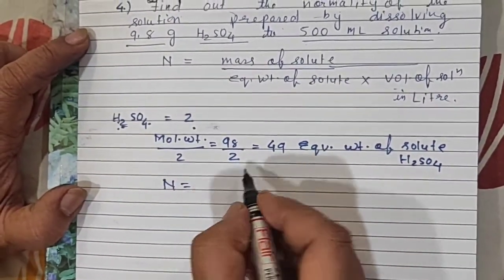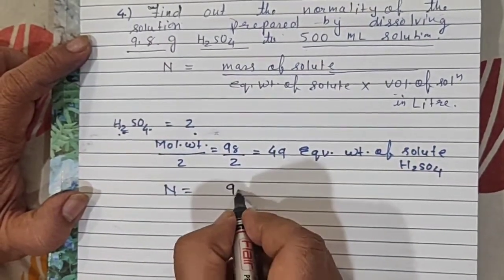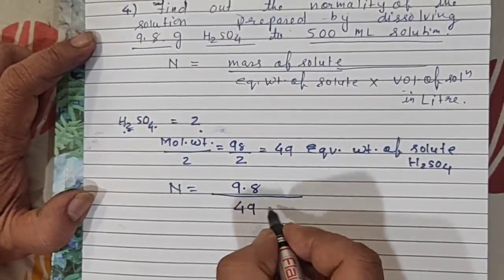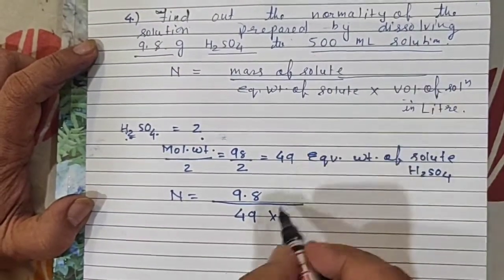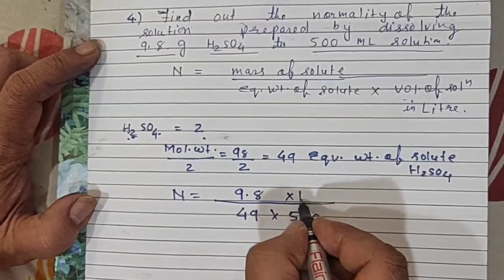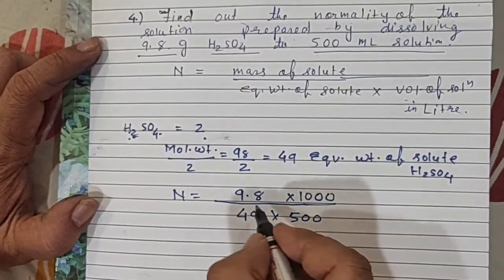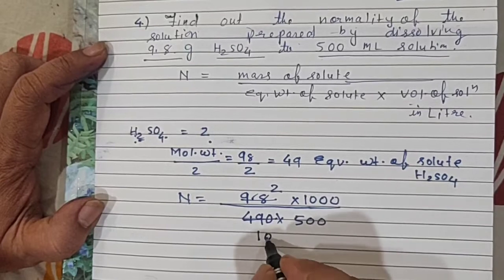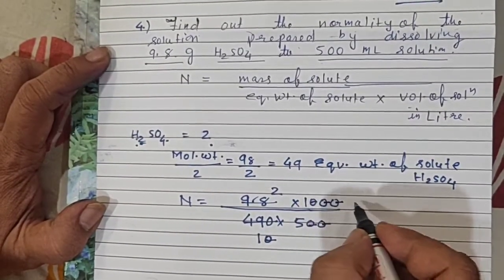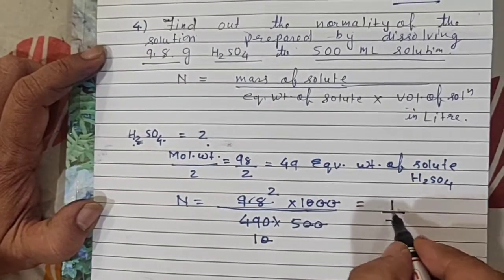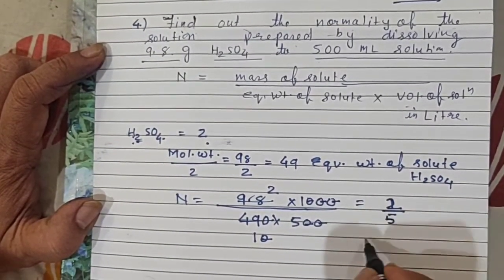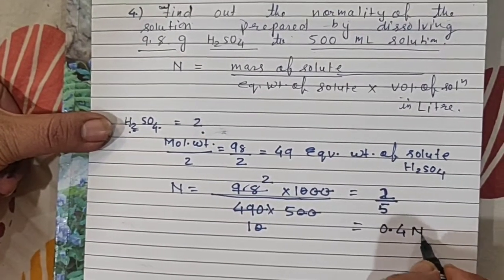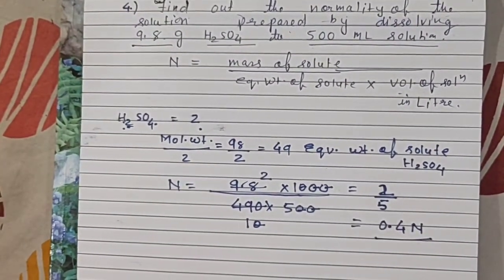Therefore, normality equals what is the mass of solute? 9.8 gram. 9.8 divided by equivalent weight 49, into volume of solution in liters. It is 500 ml, so ml converted to liter divided by 1000. Cancel, one more zero will come here. 49 divided by 2, 49 divided by 1. It is 2 upon 5. Answer should be 0.4 normal. This is the way we calculate normality.